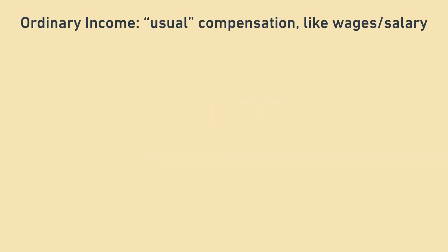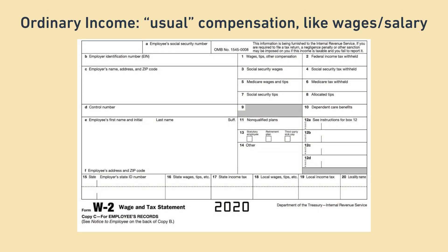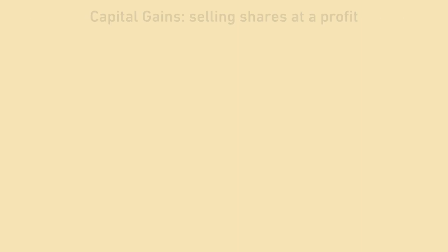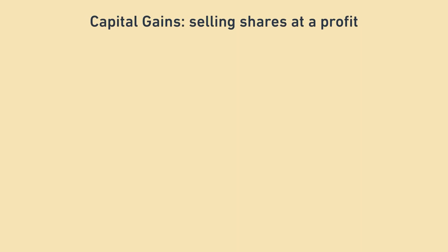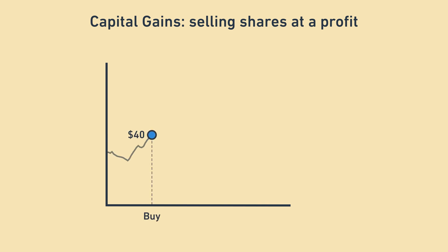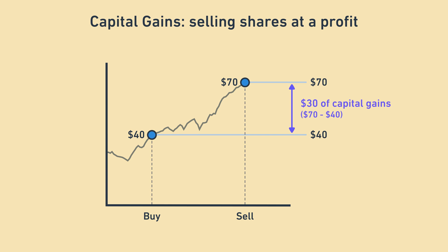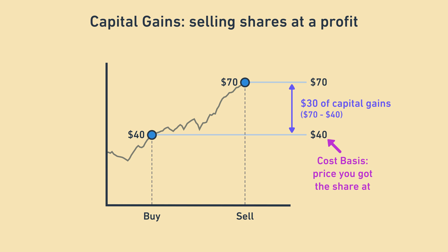Ordinary income is more or less what you make from your job, and it shows up on your W-2 form right here. Capital gains comes from receiving shares and selling them later for a profit. When you receive or buy a share at $40 and sell it at $70, that $30 difference is considered what's called capital gains, and you will pay taxes on this amount. $40 is what's called the cost basis, which is a fancy term for the price you got the thing at. When you sell a share, you need to report both the sale price and the cost basis on your taxes so that the capital gains are recorded correctly.